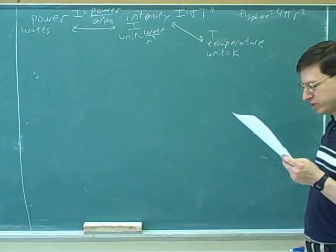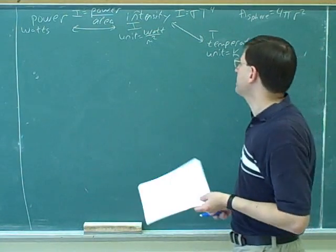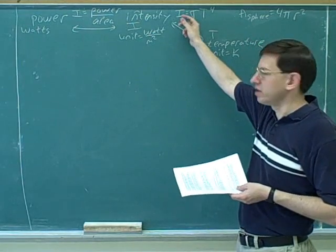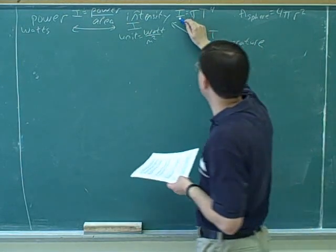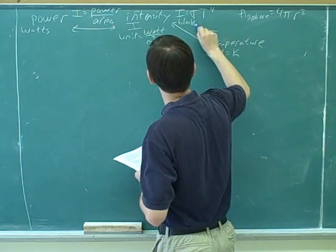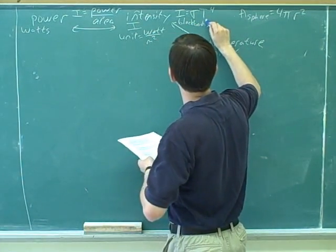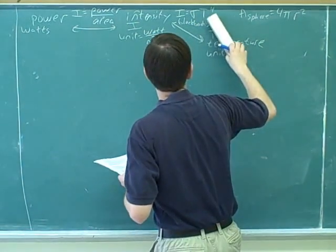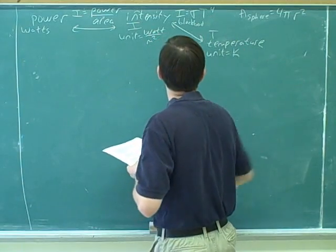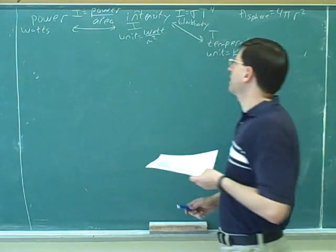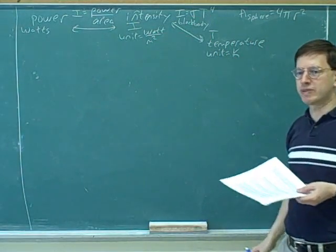This is called the Stefan-Boltzmann law for black body. So one thing to keep in mind, this is only for what are called black bodies. We only use this for black bodies, for black body radiation. It's the Stefan-Boltzmann law. So sigma is the Stefan-Boltzmann constant.